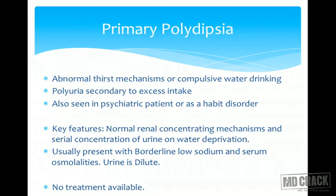Primary polydipsia is abnormal thirst mechanism causing compulsive water drinking, and polyuria is secondary to excessive water intake. It's seen in habit and psychiatric disorders. The key feature here is that kidneys have normal concentrating mechanism, so if we withhold fluid, eventually kidneys start concentrating urine. Water deprivation test helps distinguish between DI and psychogenic or primary polydipsia.